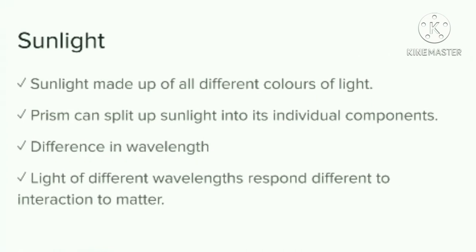The first factor is sunlight. It is made up of all the different colors of light, and the photosphere of the sun is so hot that it emits a wide spectrum of light. The highest energy light has the shortest wavelength and a high frequency, while lower energy light has a longer wavelength and a low frequency. When we see a prism split up sunlight into its individual components, the results show that red light has a longer wavelength than blue light.